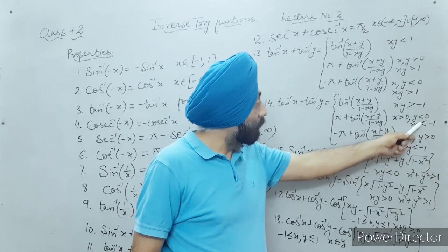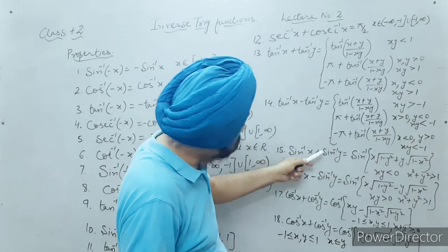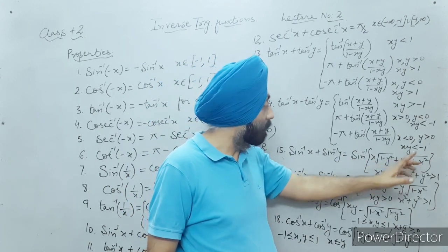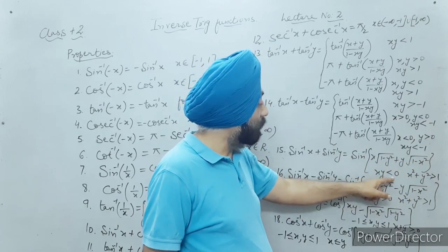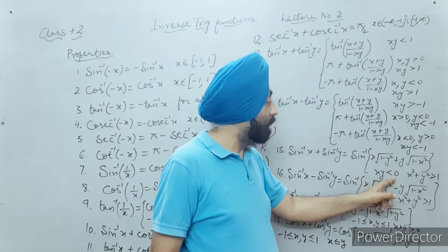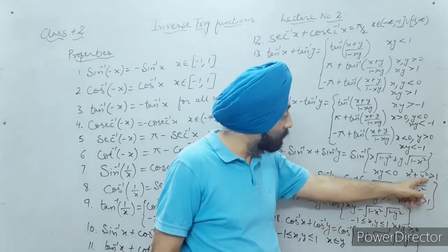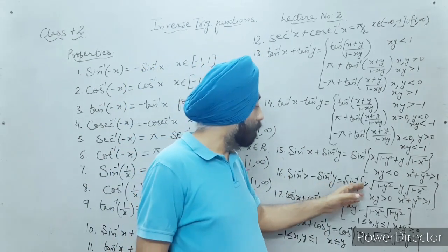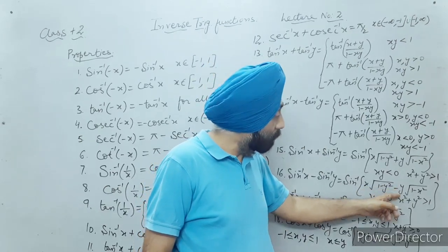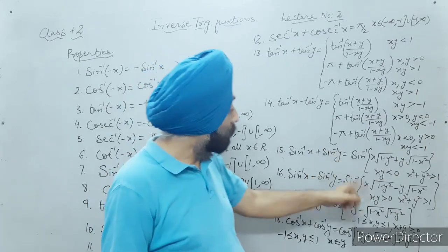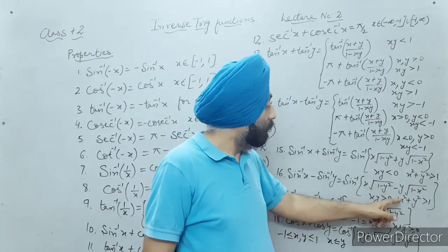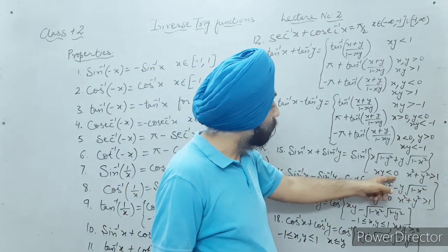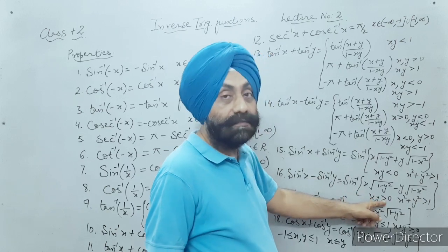Sine inverse x plus sine inverse y equals sine inverse of [x times root(1 minus y²) plus y times root(1 minus x²)]. The condition is that xy is negative but x² plus y² is greater than one. Sine inverse x minus sine inverse y equals sine inverse of [x times root(1 minus y²) minus y times root(1 minus x²)], where xy is greater than zero but x² plus y² is greater than one. In the first formula the product xy is negative; in the second formula xy is positive.